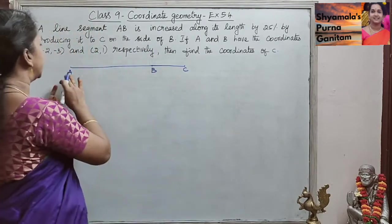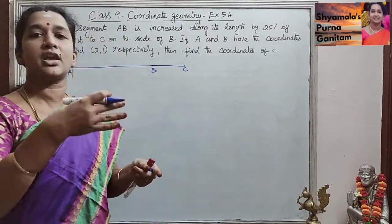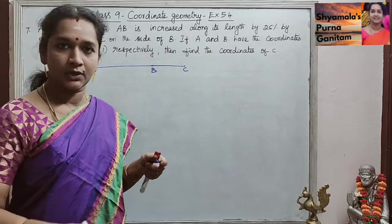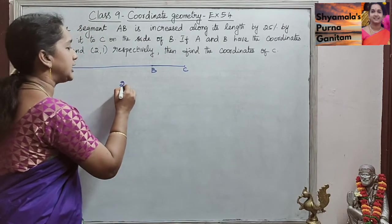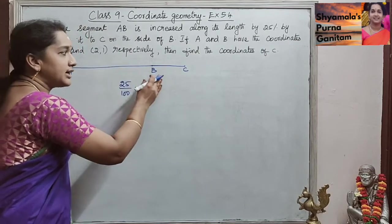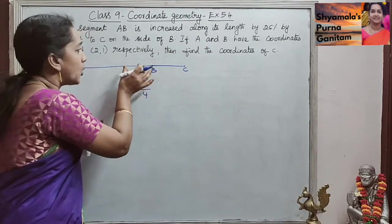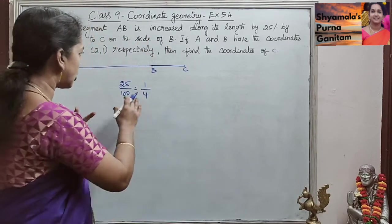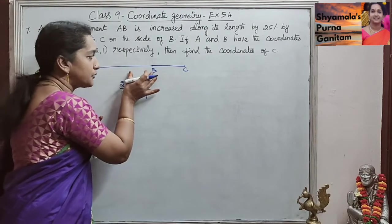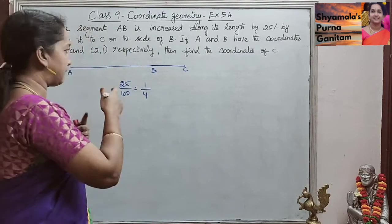For calculating, we take A to B as 100%. In this, 25% they are increasing. So 25% means 25 by 100, that is 1 by 4. So we will divide AB into 4 parts — that is, 4 parts in total — and one part they are increasing to C. So totally 4 parts are there, and in that 4 parts, one part represents the 25% increase.